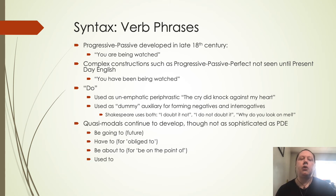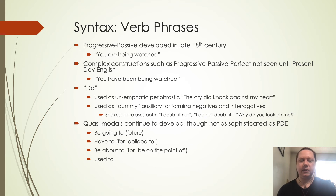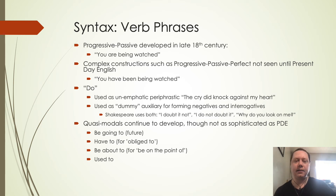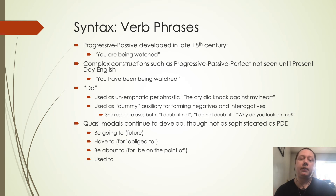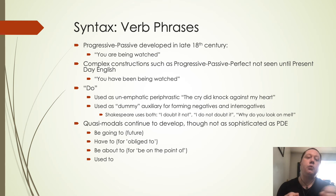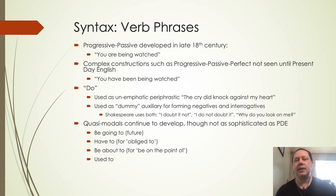We also see quasi-modals continue to develop — phrasal modals that are not quite as sophisticated as present-day English but are starting to grammaticalize and turn into more of a function use rather than a content use. 'Be going to' for the future starts to emerge, 'have to' for being obliged to or needing to do something, 'be about to' for something that will happen soon, and 'used to' — these are developing during this time but not used as frequently as what we see in present-day English.